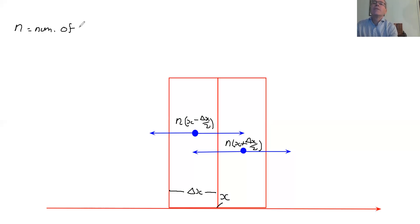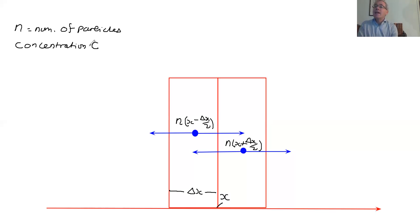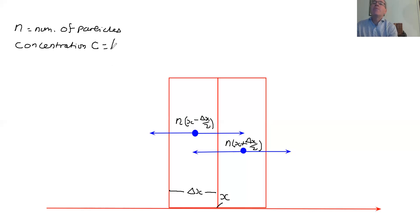N is the number of particles. We're also going to consider a concentration C, because we normally write Fick's law in terms of concentration. C, in these particular exercises, I'm going to assume is a mass per unit fluid volume. So my concentration is M — the mass of a single particle — times the number of particles divided by the fluid volume.